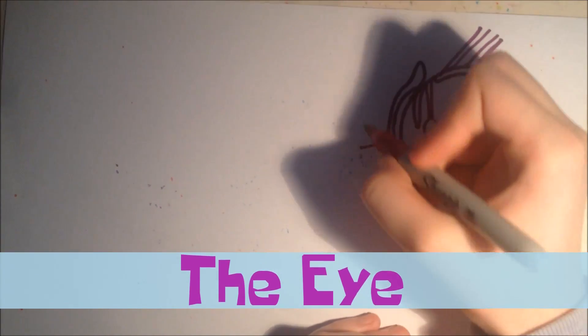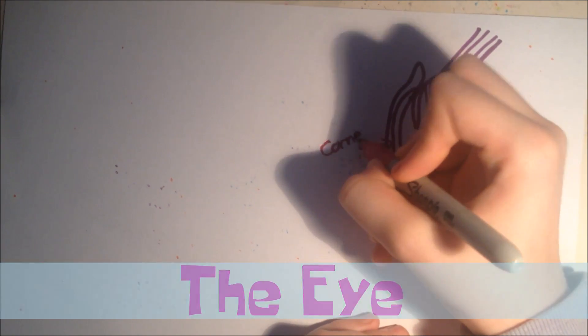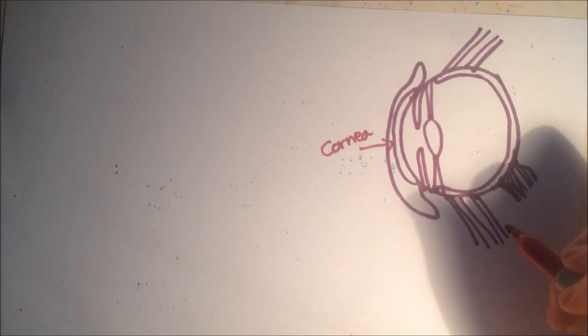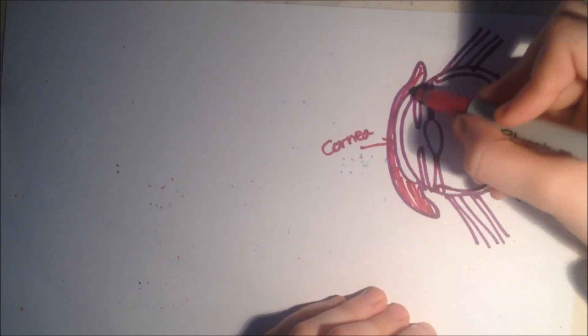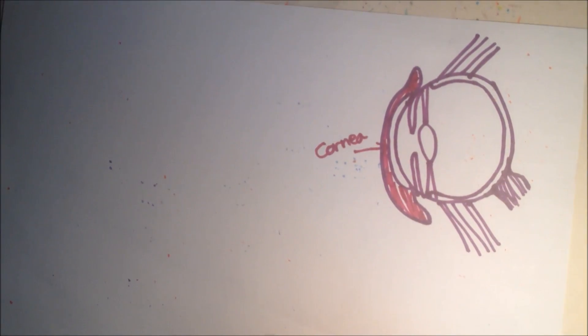Now we are on to the eye. So first of all, we'll start with the front. This is the cornea, which refracts light into the eye. So this part here, color it in.